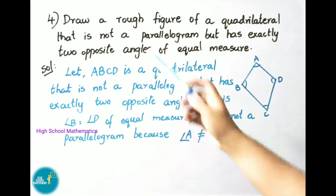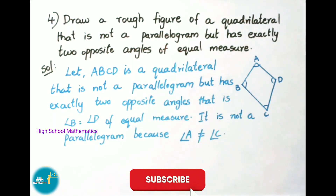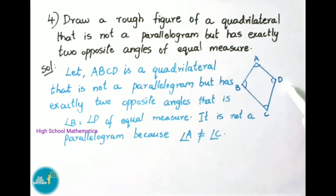Question number 4: Draw a rough figure of a quadrilateral that is not a parallelogram but has exactly two opposite angles of equal measure. Here we have drawn figure ABCD. Let ABCD be a quadrilateral that is not a parallelogram but has exactly two opposite angles equal, that is angle B equals angle D. This ABCD is not a parallelogram because angle A is not equal to angle C.